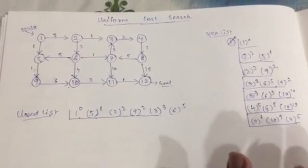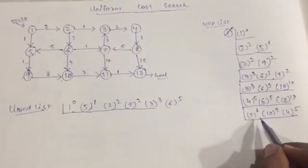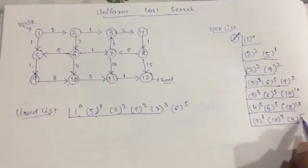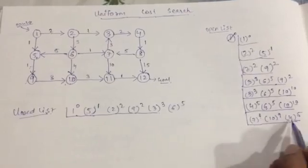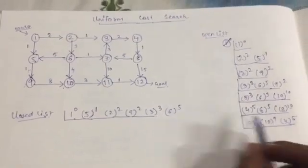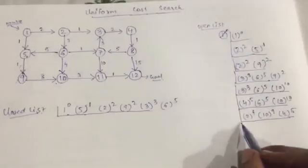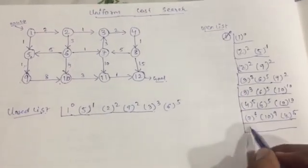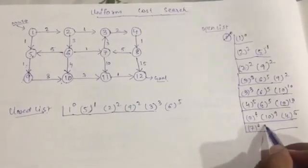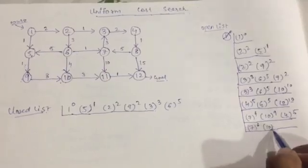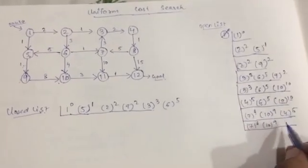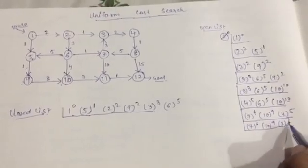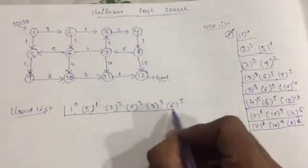Now which one is minimum from 5, 5, 9, and 6? It's 5, so let's move from node 4 to node 8. Node 8 gets value 2 plus 6 equals 8, minimum is 2 plus 6. Include node 4 in the closed list.